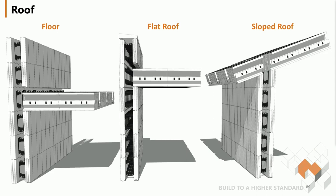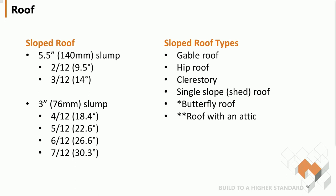Now we get into the roof systems. AMDEC can be used for roof applications including both flat and sloped roofs. For a sloped roof application, for shallow slopes a 5.5-inch slump is fine, but going to a 4 by 12 pitch or higher you'd want to reduce the slump to 3 inches to ensure the concrete stays in place when poured. We generally don't see slopes exceeding 30 degrees with AMDEC and would not recommend going higher. AMDEC can be configured in various roof types: the most common are gable, hip, single slope, and shed style. Clerestory, butterfly roofs, and attic-style roofs are also possible.